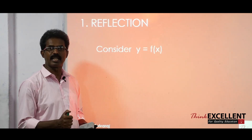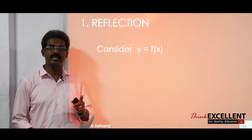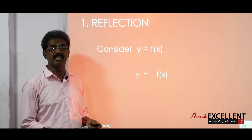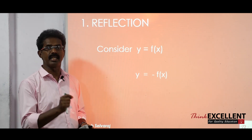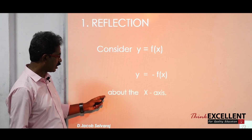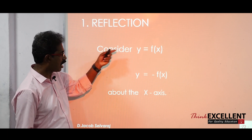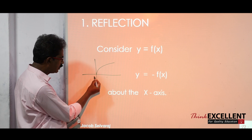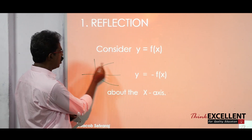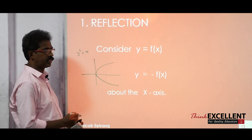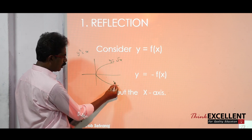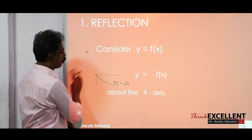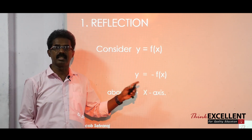The first transformation is reflection. You take a function f(x). There are three types of reflections. Reflection on the x-axis: when the curve reflects on the x-axis, that is minus f(x). For example, if y equals root x is f(x), then y equals minus root x is minus f(x), and this is reflection on the x-axis.